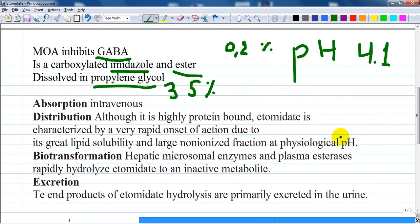At first glance, etomidate would appear to have some desirable properties, but due to its side effects its place in anesthesia remains limited. Let's talk about pharmacokinetics. It is absorbed intravenously and available only in intravenous form with bioavailability of 100%.